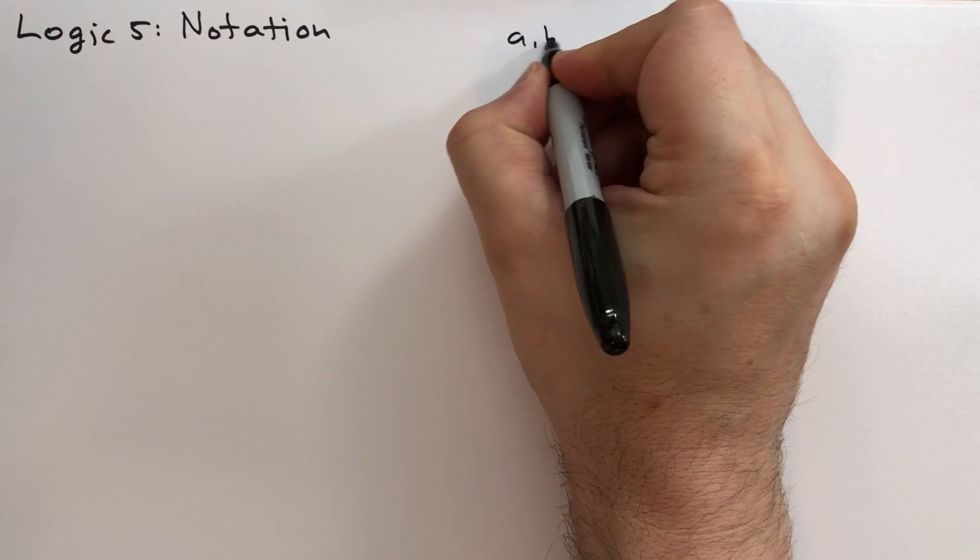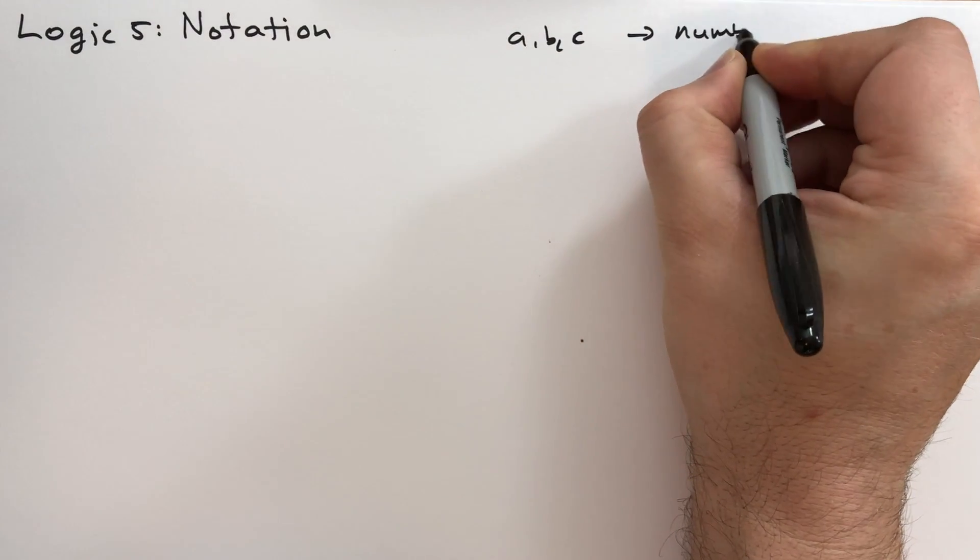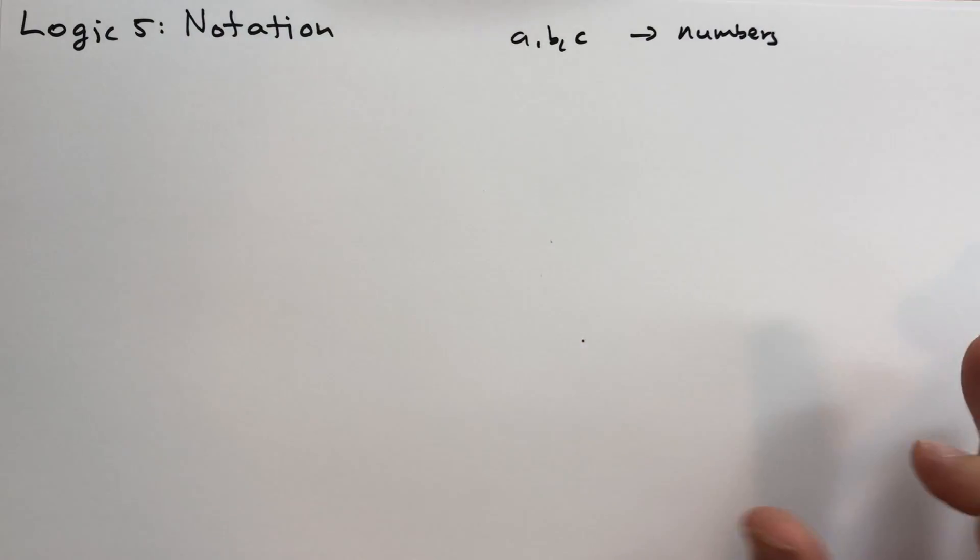He says lowercase letters like a, b, and c are usually numbers, like 1, 2, 3, 4, things like that.